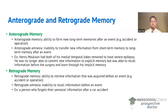If someone has retrograde amnesia then they are unable to recall information before an event. This would be a situation where someone gets in a car accident and is not able to remember who they are — they cannot remember their personal information and they cannot remember their childhood experiences. This would be retrograde amnesia.